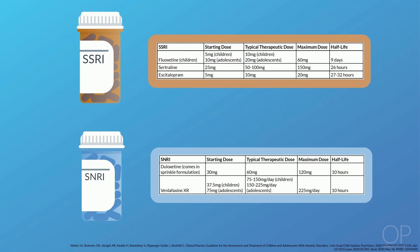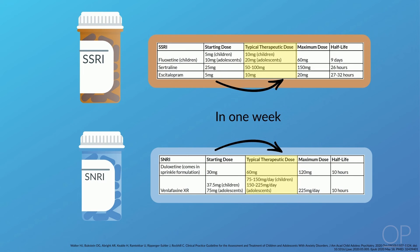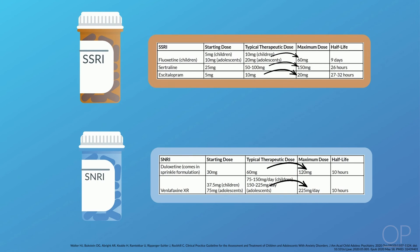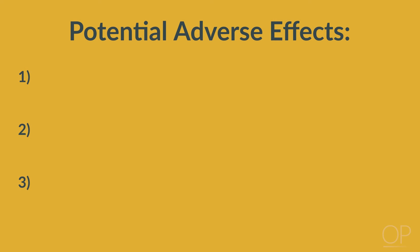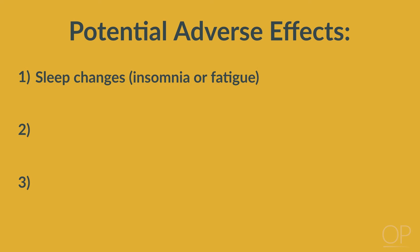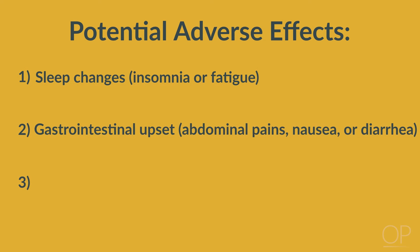The motto 'start low and go slow' is a good reminder of how SSRIs and SNRIs should be dosed and titrated for children with anxiety disorder, particularly given that families may be extra aware and sensitive to even brief transient side effects. Most practitioners initiate treatment with the starting dose seen in this table. If the drug is tolerated, after one week the dose is doubled to achieve the typical therapeutic dose. If there is inadequate response after an additional three weeks and the drug is still tolerated well, the dose can be substantially increased in a stepwise fashion up to the maximum dose. Common side effects of SSRIs include sleep changes, insomnia or fatigue, GI upset, abdominal pain, nausea, or diarrhea, and restlessness.